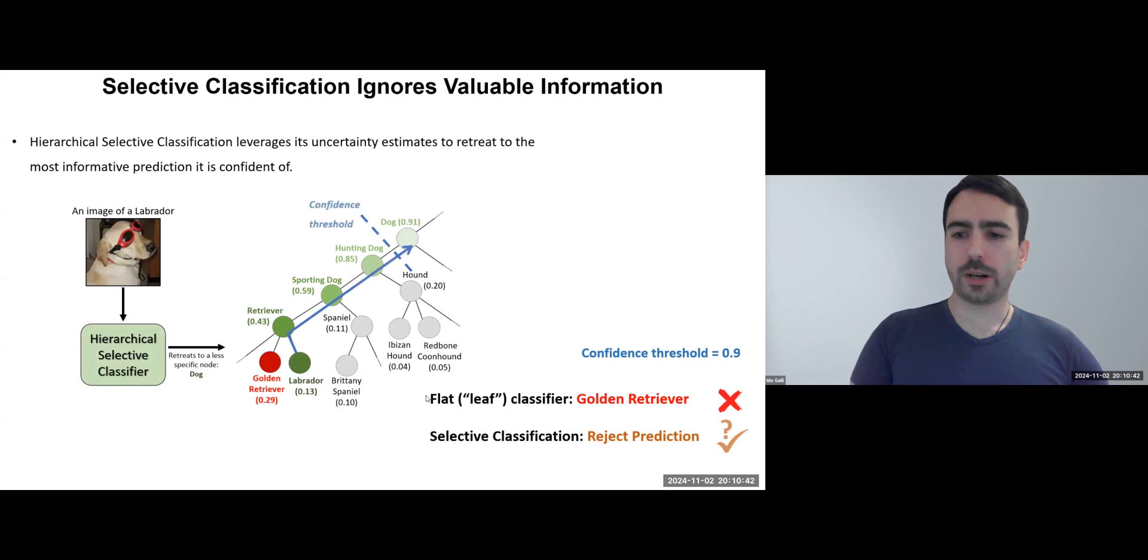We introduce hierarchical selective classification, which uses hierarchical knowledge to reduce label specificity, increasing accuracy. Hierarchical selective classification also extends the definition of coverage to reflect the amount of information in each prediction.